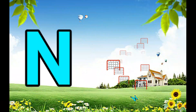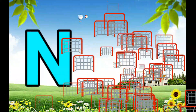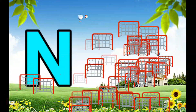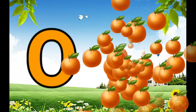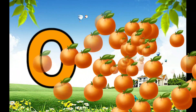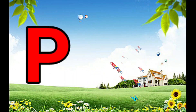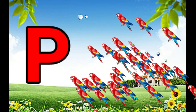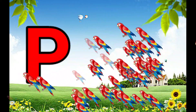N is for Net, N-N-Net. O is for Orange, O-O-Orange. P is for Pet, P-P-Pet.